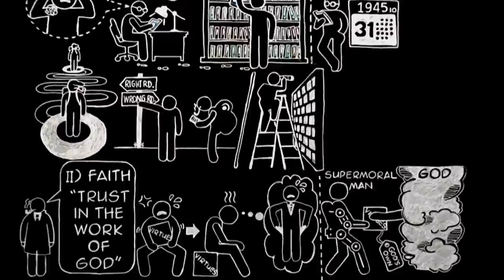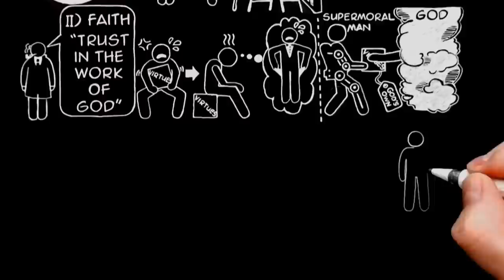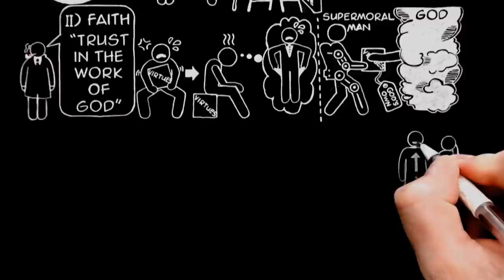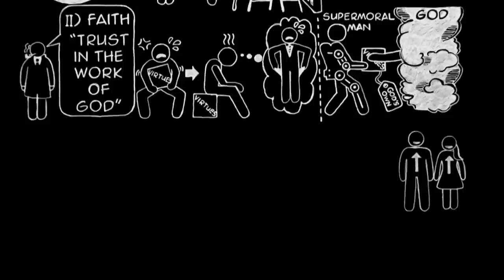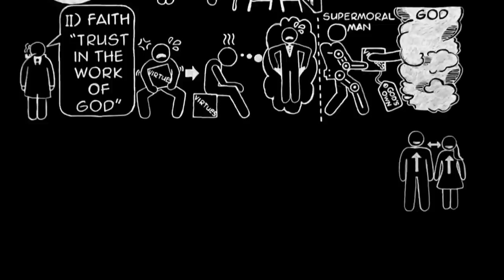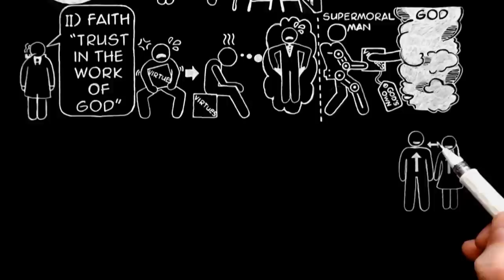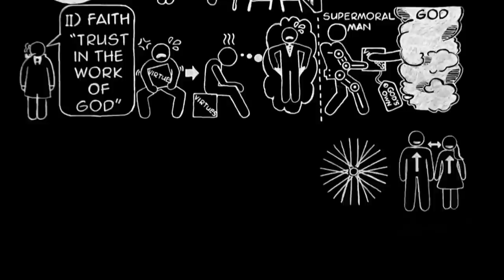Now, once again, what God cares about is not exactly our actions. What he cares about is that we should be creatures of a certain kind or quality, the kind of creatures he intended us to be, creatures related to himself in a certain way. I do not add, and related to one another in a certain way, because that is included. If you are right with him, you will inevitably be right with all your fellow creatures, just as if all the spokes of a wheel are fitted rightly into the hub and the rim, they are bound to be in the right positions to one another.